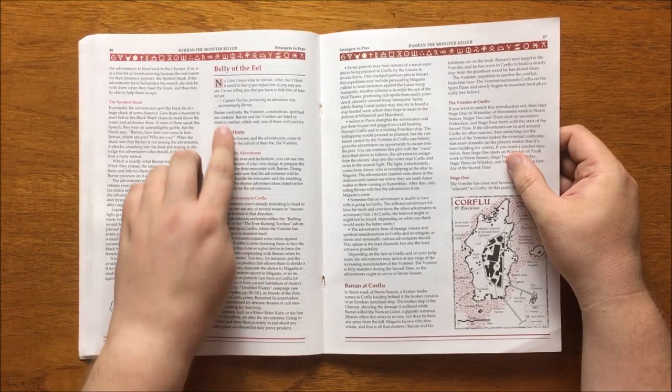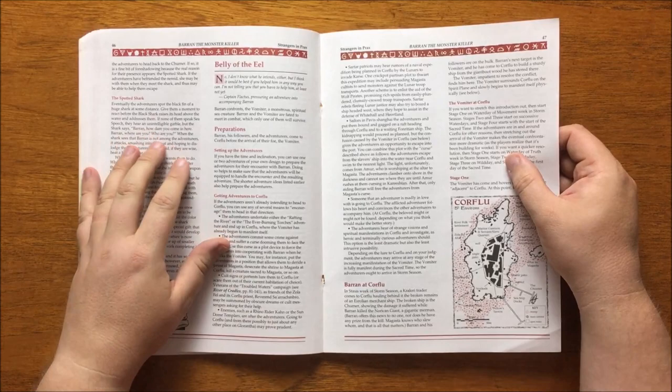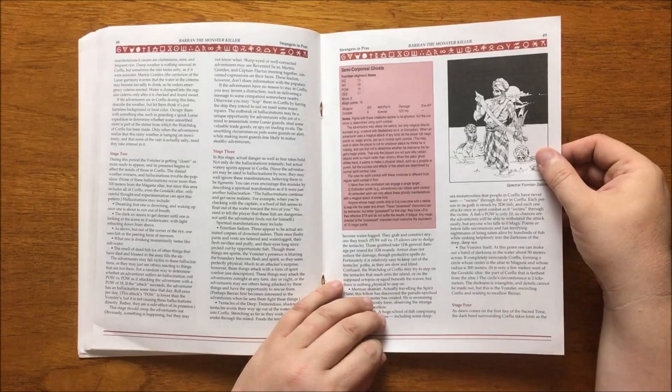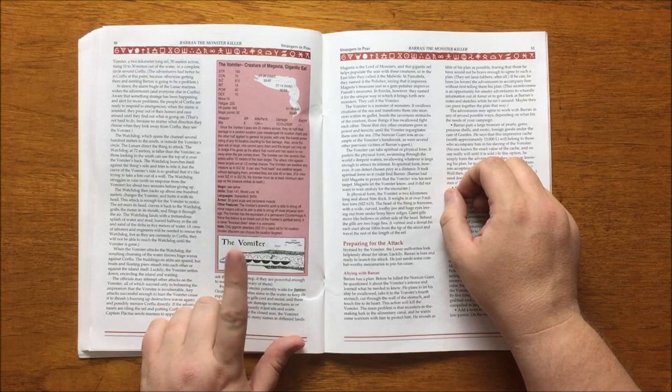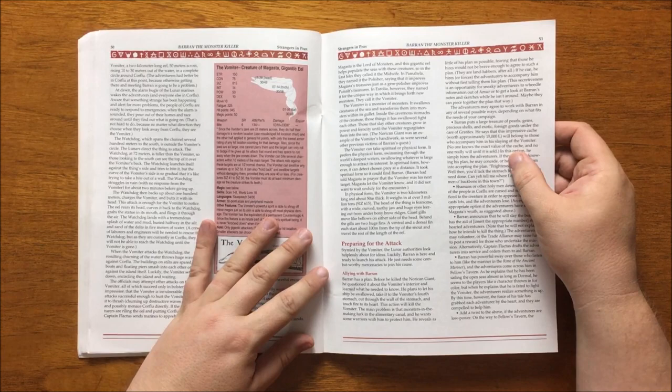The next part is called Belly of the Eel. The adventurers are in Corflou, and over the next few days the Vomiter makes its presence known in the spirit plane with manifestations of ghostly pirates, fish seemingly swimming in the air, and water becoming salty. It should all accumulate on the first day of sacred time when the Vomiter arrives. Watchdog, the protector of Corflou, goes out to confront the Vomiter but is flung through the air and buried in silt and sand under 5 metres of water.